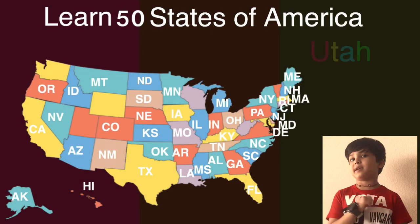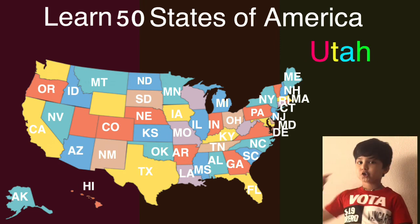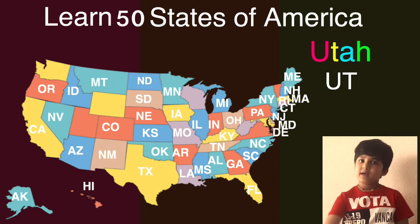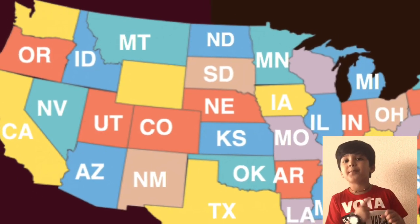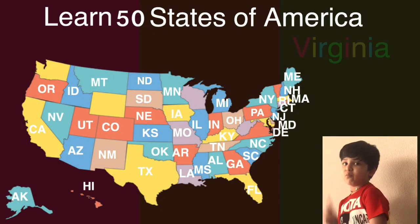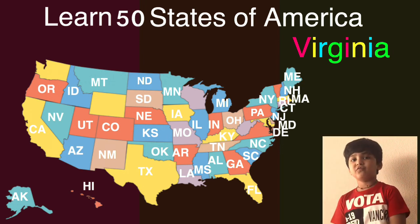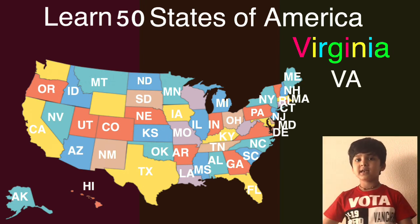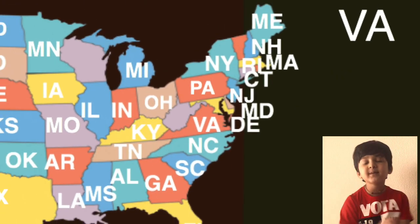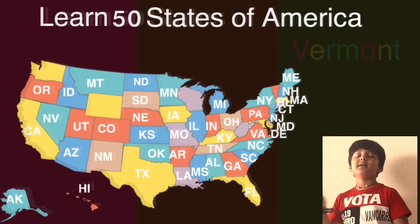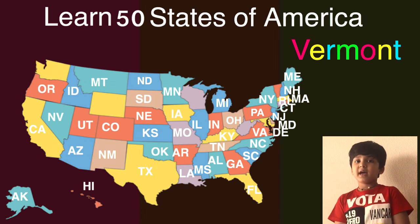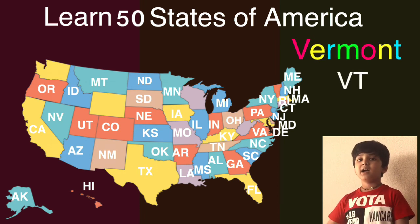The next one is Utah and the short one is UT. Here comes Utah on the map, can you guess what will come next? The next one is Vermont and Virginia. Virginia's short one is VA. Here comes Virginia on the map. The next one is Vermont and the short one is VT. Here comes Vermont on the map, can you guess what will come next?